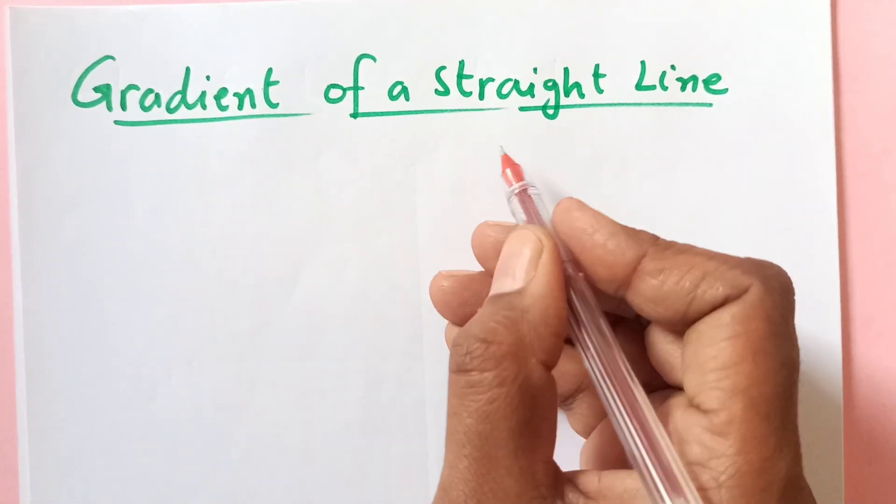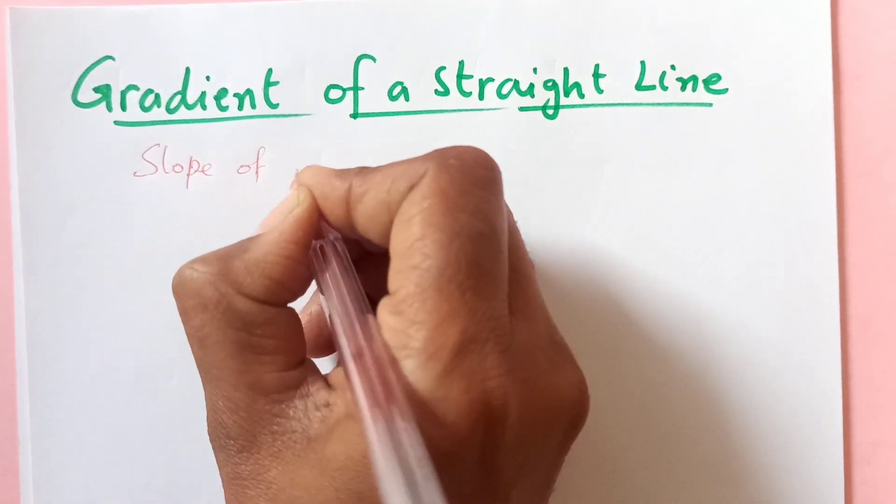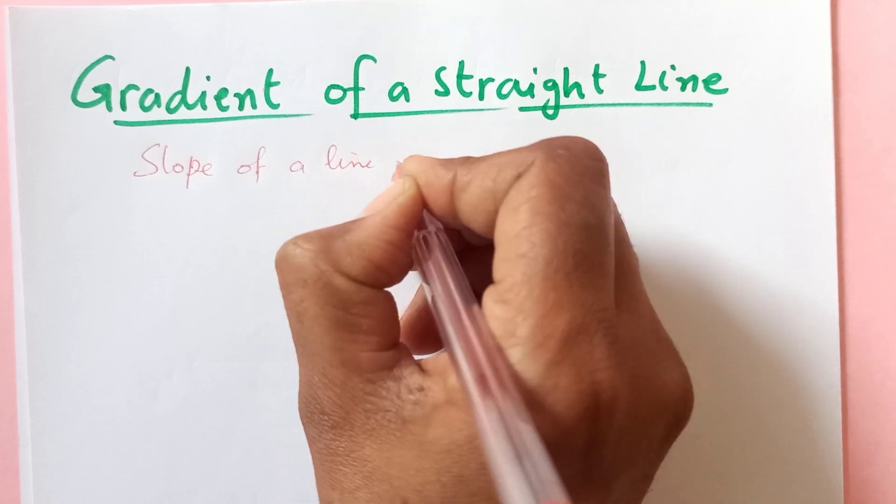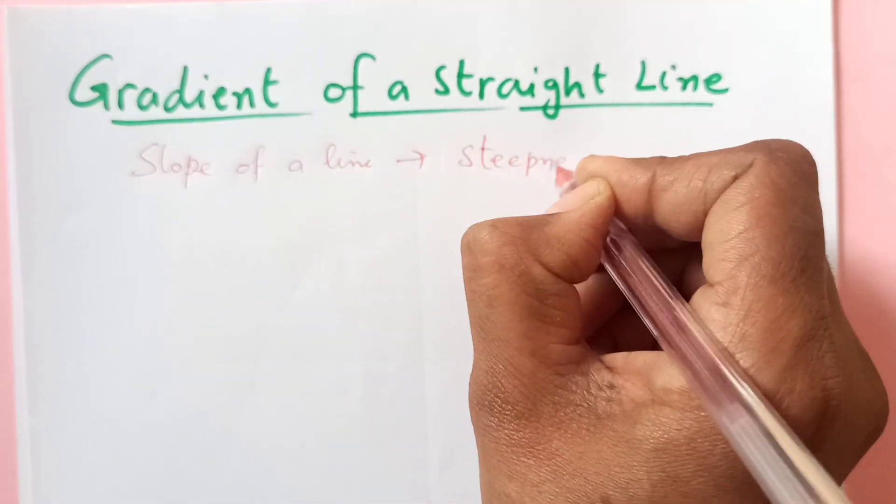Now gradient of a straight line, gradient is also known as slope of a line. This actually tells us about the steepness of the line.